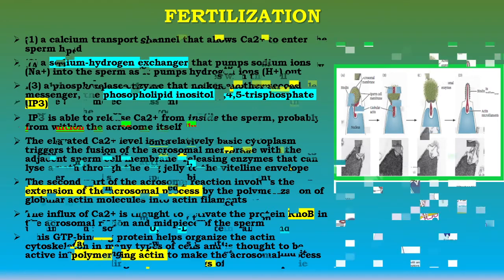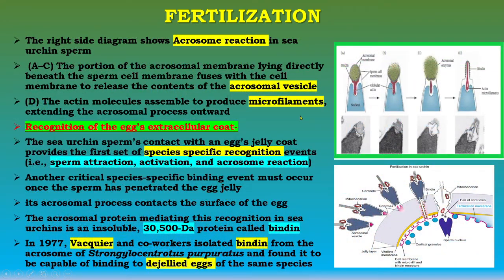The diagram shows the acrosome reaction in sea urchin sperm. In the first step, the portion of the acrosomal membrane lying directly beneath the sperm cell membrane fuses with the cell membrane to release the contents of the acrosomal vesicle. The acrosomal enzymes are released, and actin molecules assemble to produce microfilaments extending the acrosomal process outward.